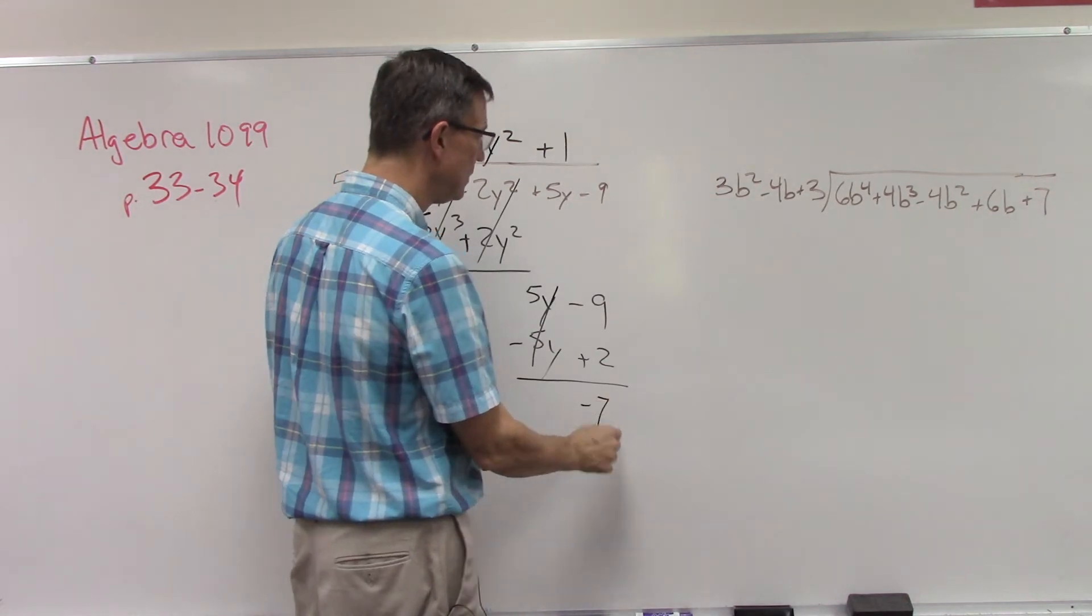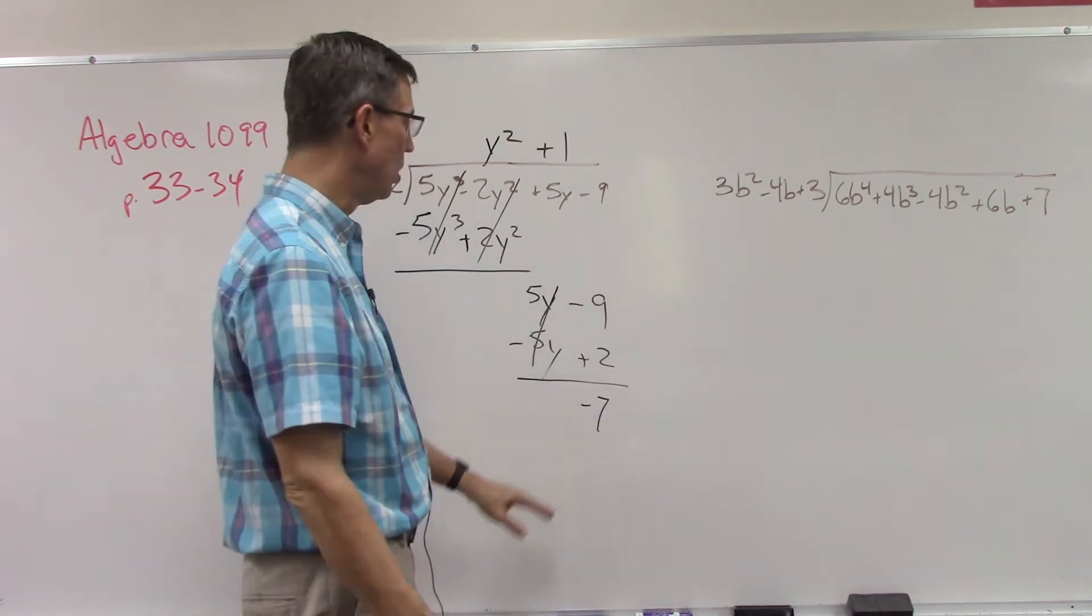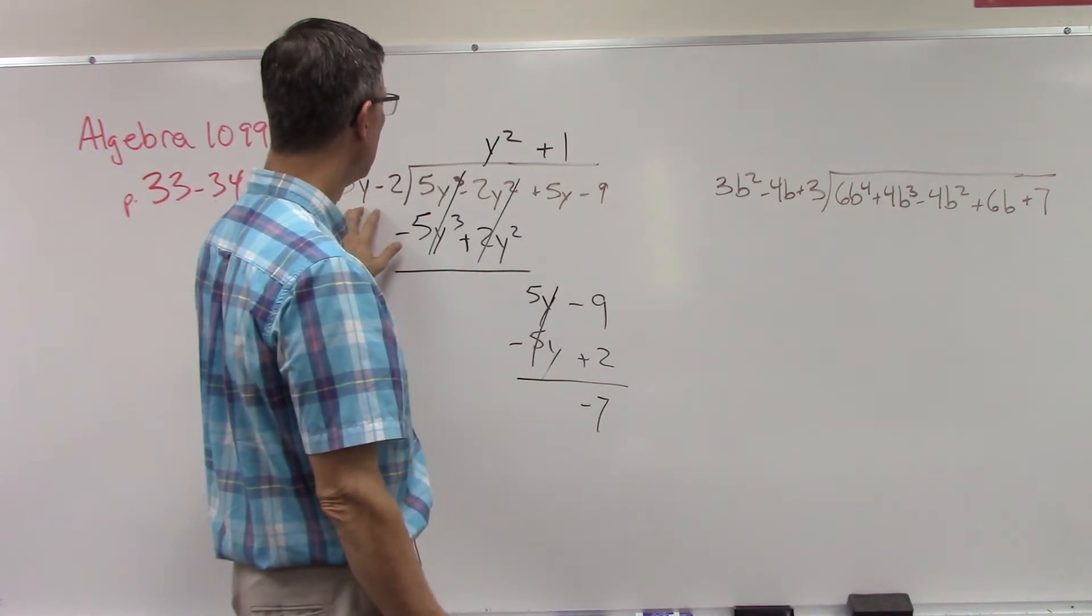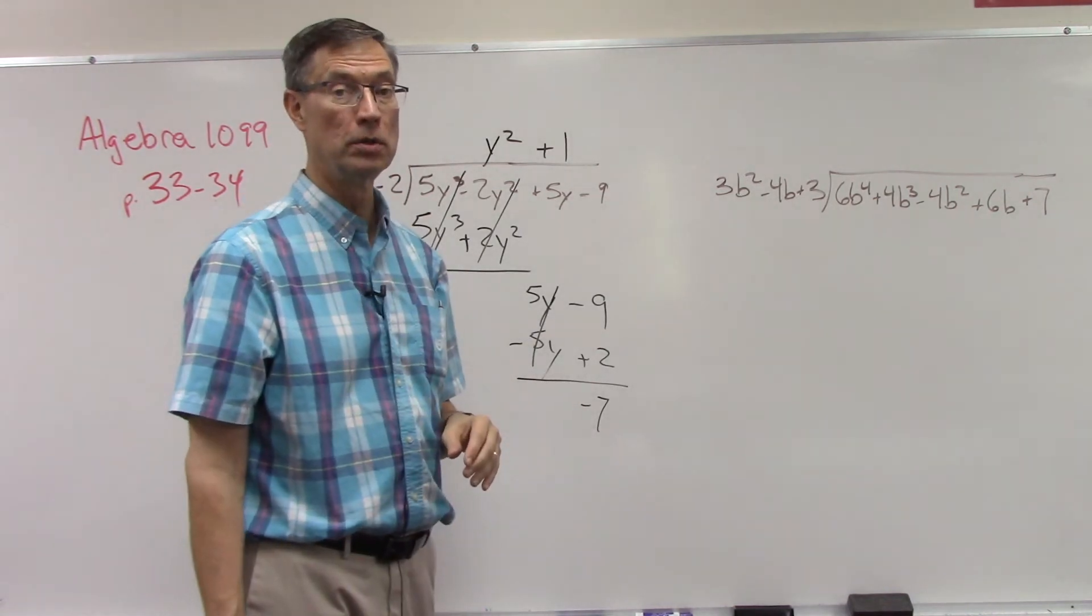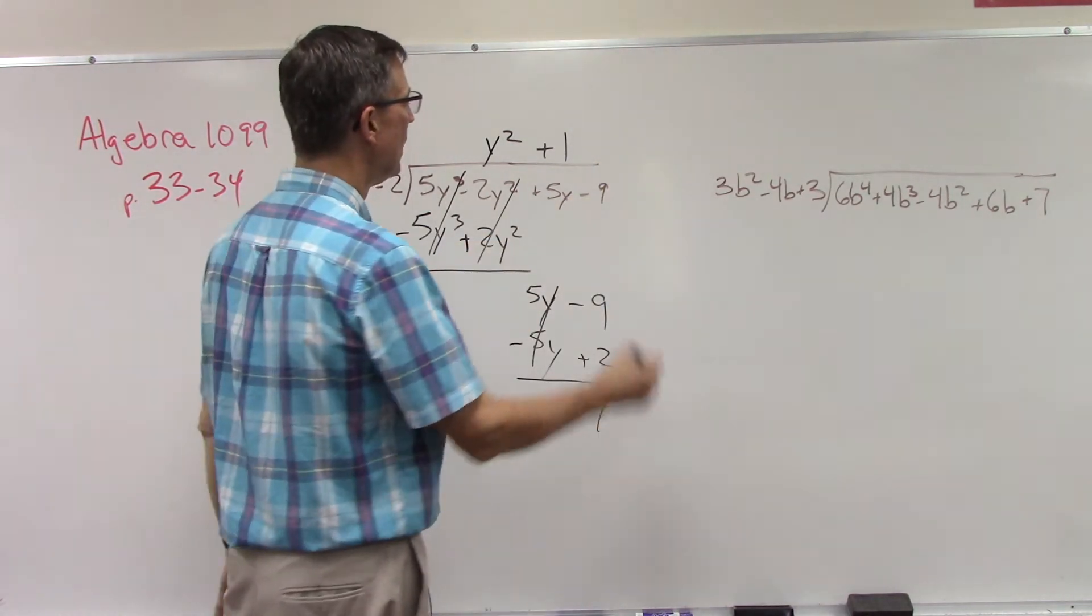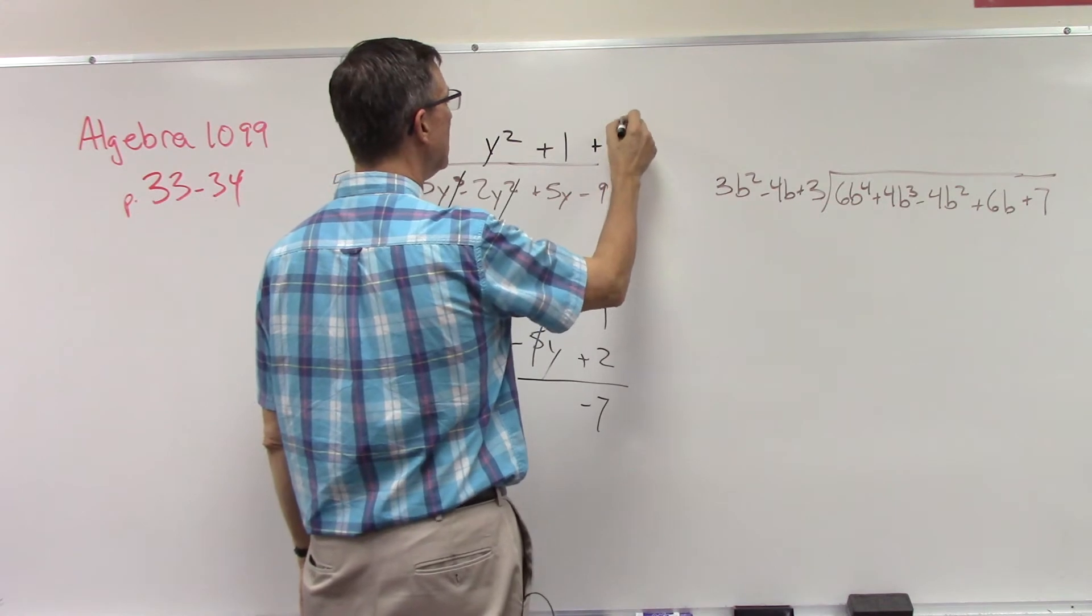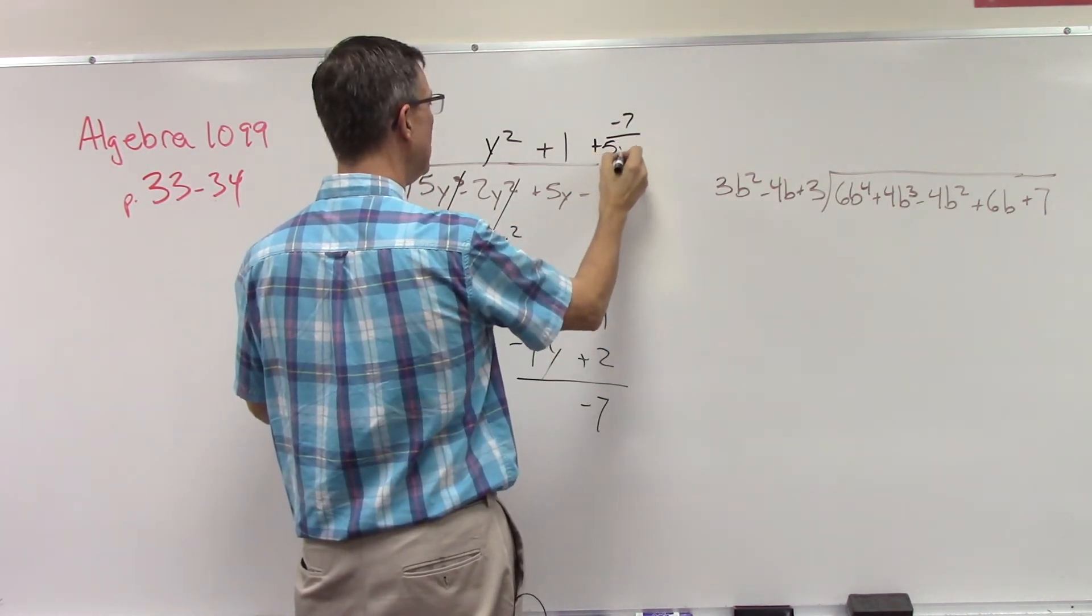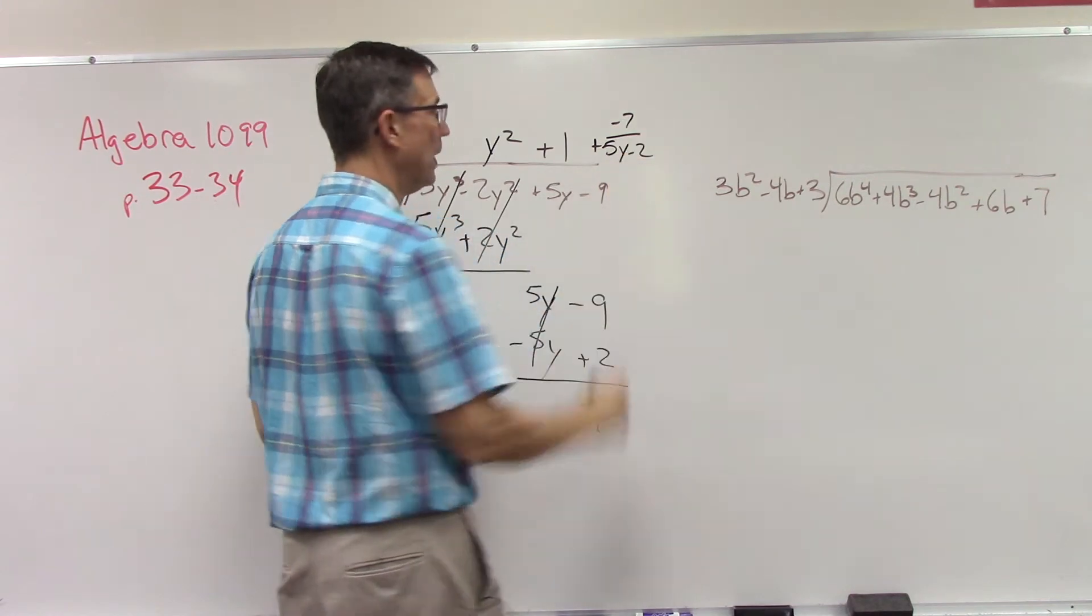So what we do is we take the negative 7 and we put it over the divisor. We don't say r7, negative 7, like remainder, but we write plus negative 7 over the divisor 5y minus 2.